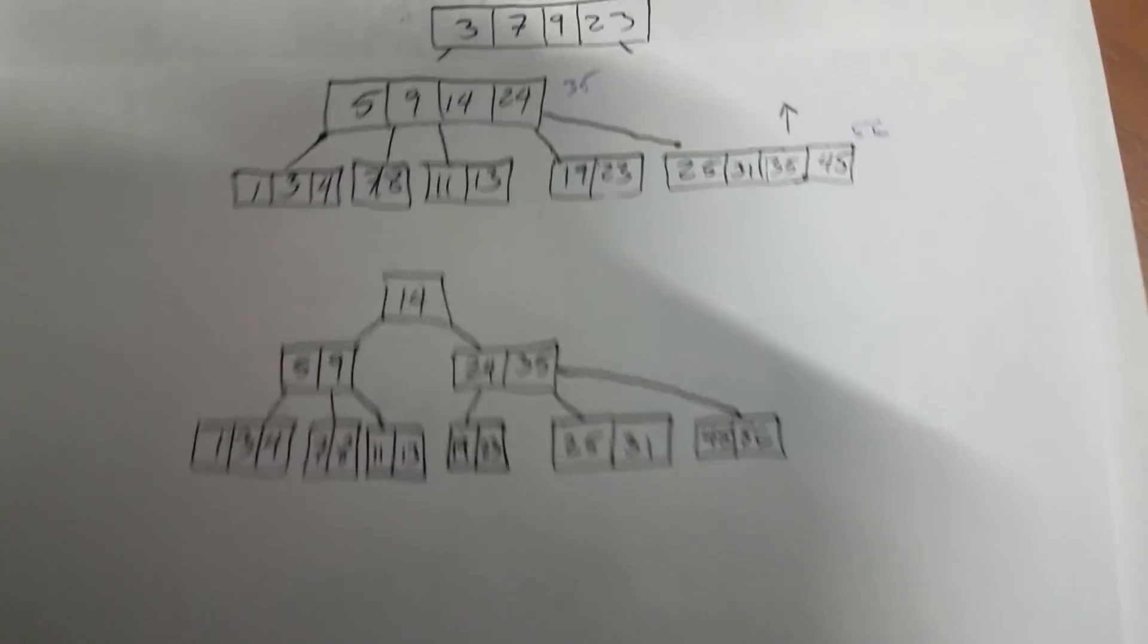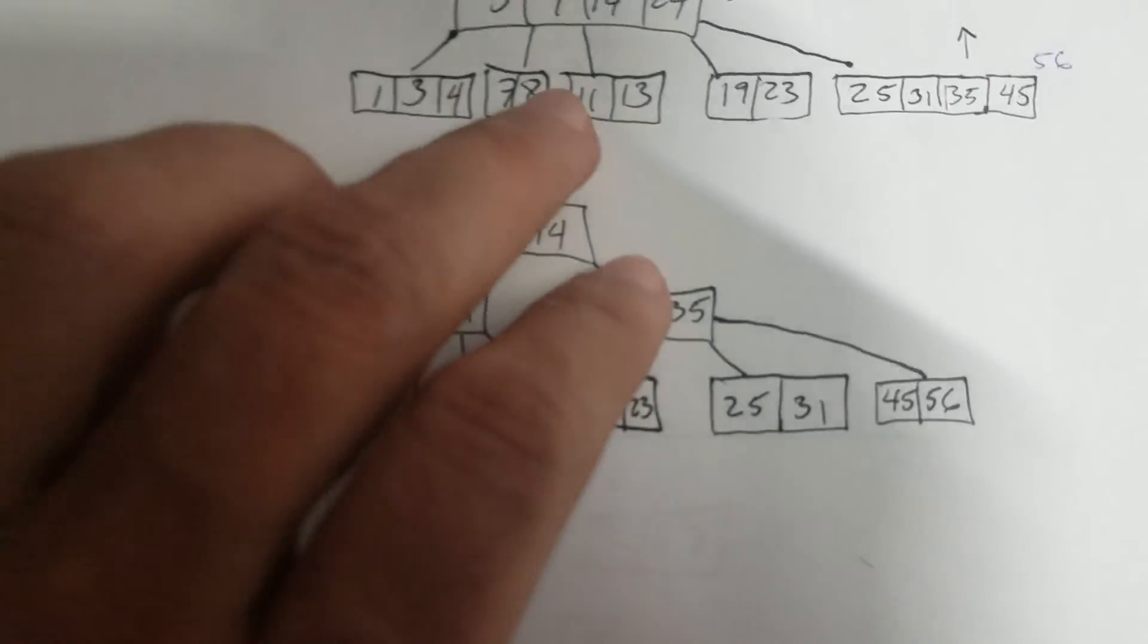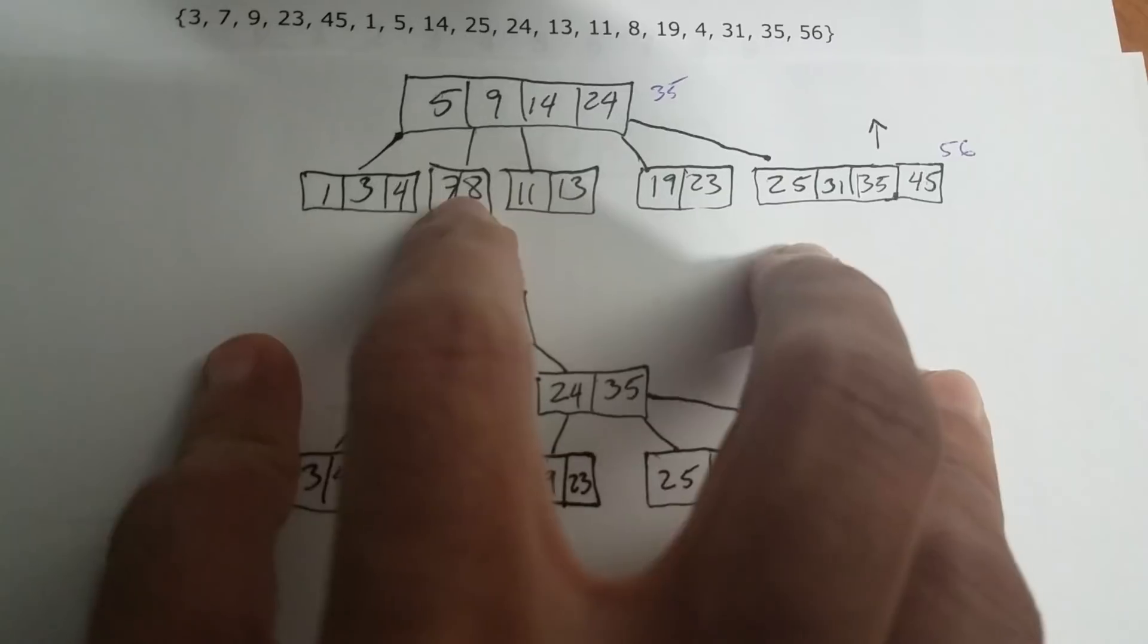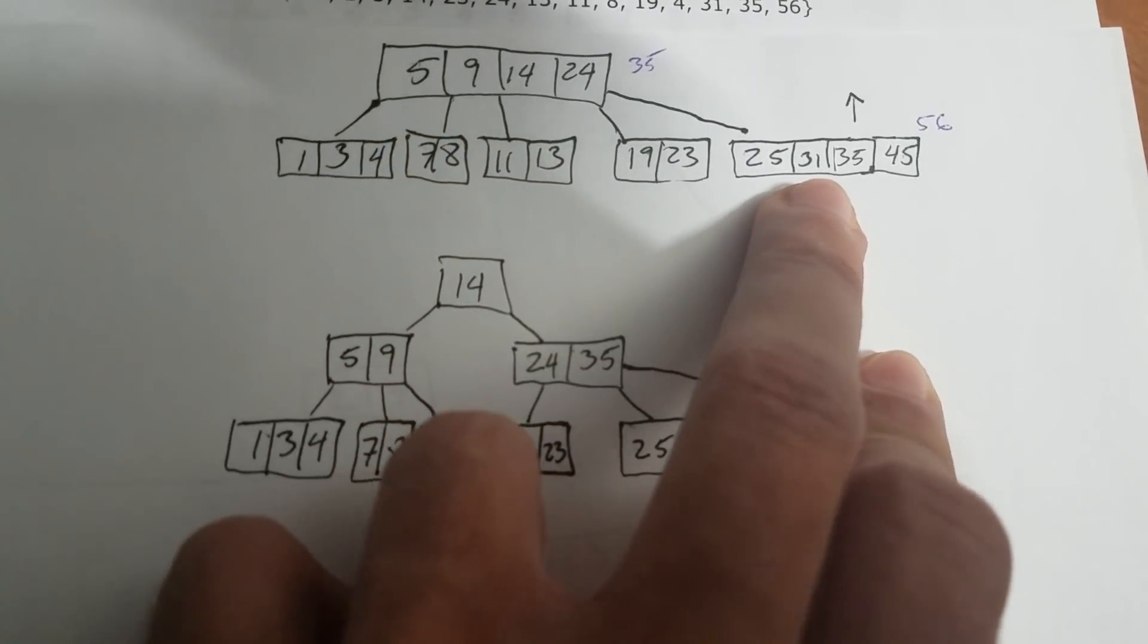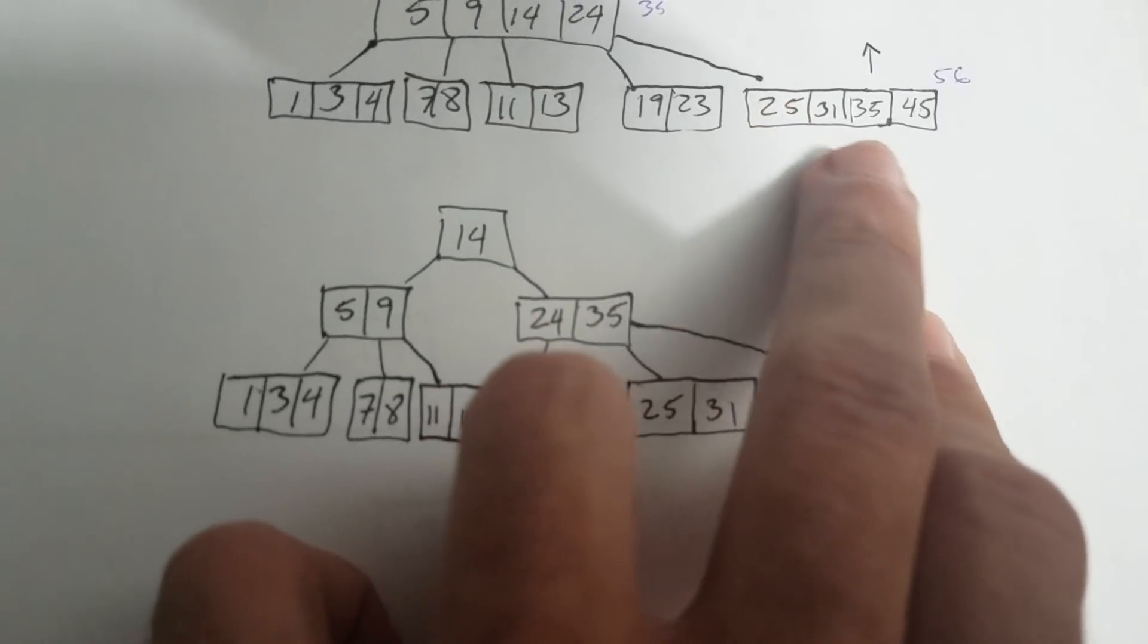Now we need to add here. So now the next one is going to be 31 and 35. 31, we have some room so we can put it here. 35 as well. So far, we have four.